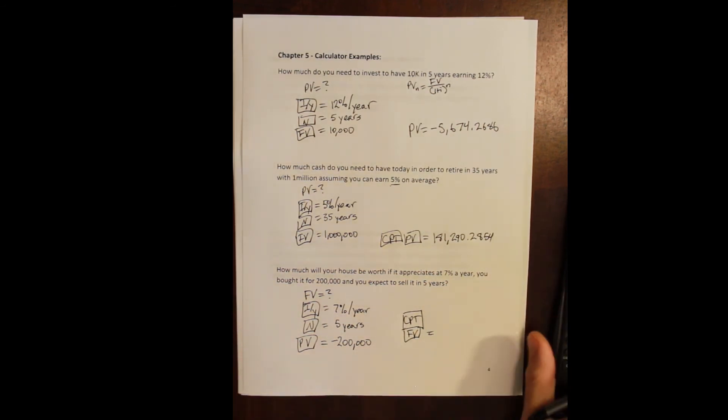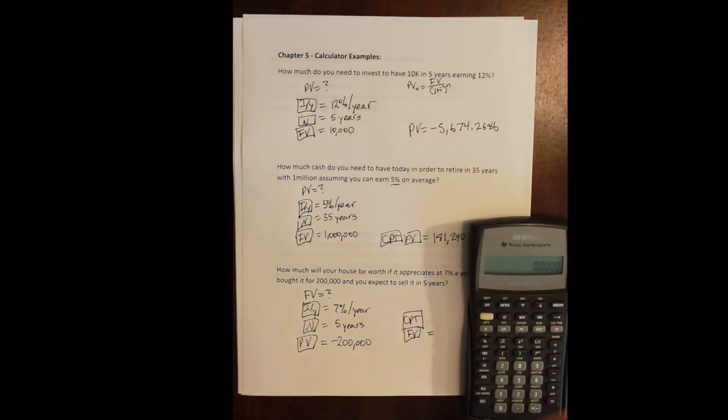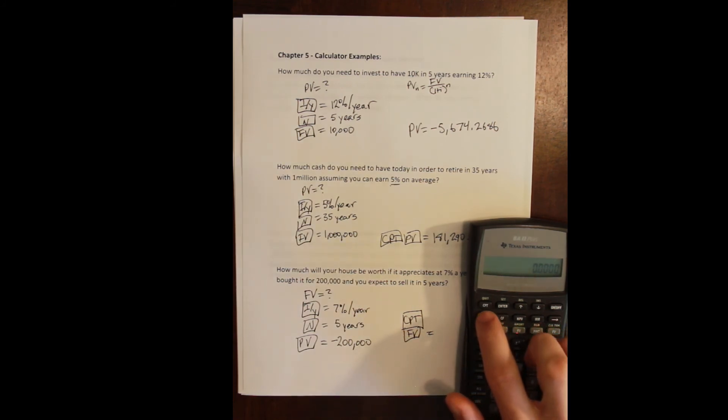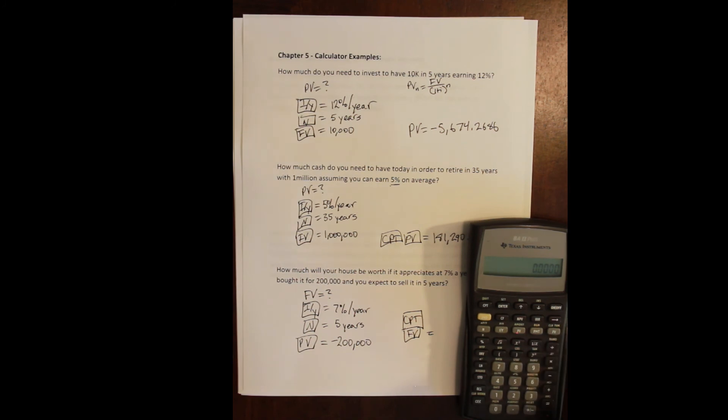So we compute future value here. Again, let's just do it on the calculator. By the way, turning your calculator on and off does not clear these values either. The only way to do it is to suppress clear time value of money. We'll do that to start every problem: second, future value to clear the time value of money. We start with 7 and I/Y.